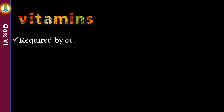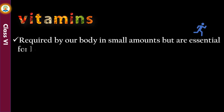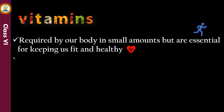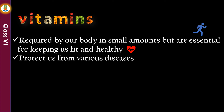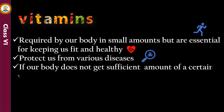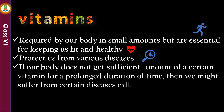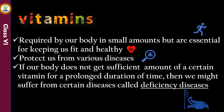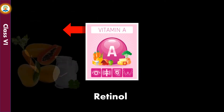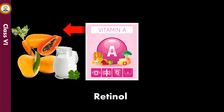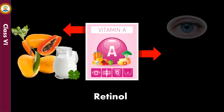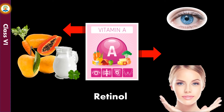Vitamins are required by our body in small amounts but are essential for keeping us fit and healthy, and they protect us from various diseases. If our body does not get sufficient amounts of a certain vitamin for a prolonged duration of time, we might suffer from certain diseases called deficiency diseases. Sources of vitamin A are papaya, carrot, mango, pumpkin, and milk; it keeps our eyes and skin healthy.